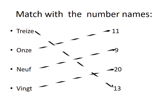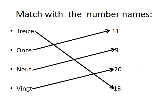Match the number names: 'treize' — thirteen, 'onze' — eleven, 'neuf' — nine, 'vingt' — twenty. So children, learn the number names — how to write and pronounce them. Watch the video again and remember it. I will give you some exercises and you can complete them. Till then, bye, take care.